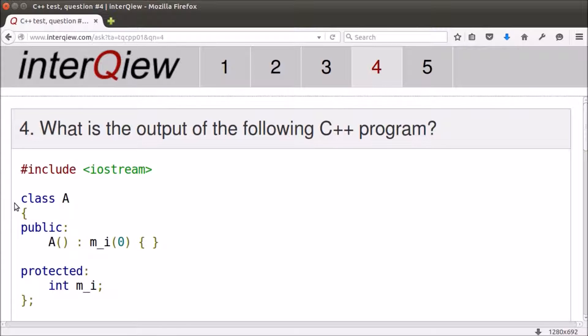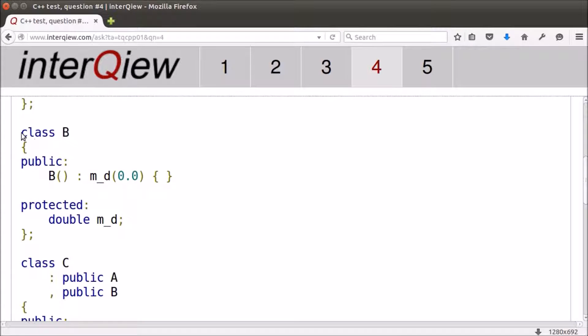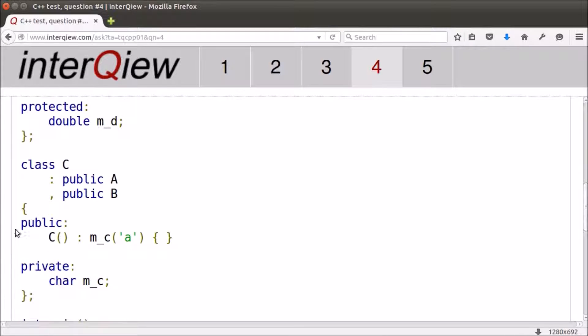In this program, we have multiple inheritance. Class A and Class B are base classes, each with a default constructor and a data member. Class C is publicly derived from A and B and has a constructor and a data member too.